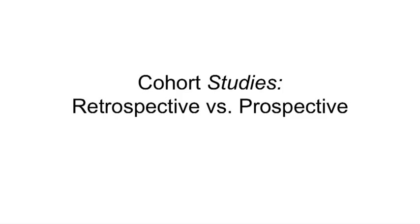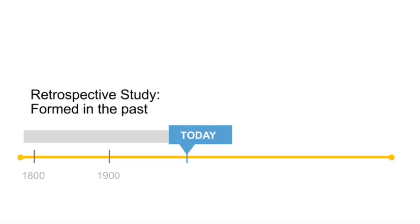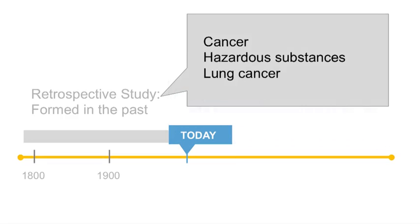There are two types of cohort studies — retrospective and prospective — classified according to their temporal sequence. Retrospective and prospective refer to the time the investigator initiates the study and starts collecting data. Both designs assemble cohorts on the basis of exposure first. In the retrospective study, the cohort is formed in the past. In the prospective study, the cohort starts now and goes into the future. In a prospective study, investigators obtain baseline exposure data in real time and then follow cohort members to measure the occurrence of the health outcome or disease.